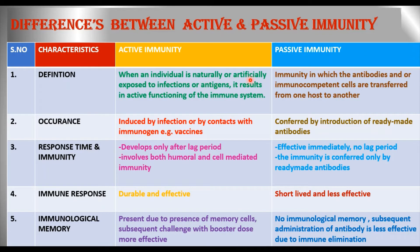What is the definition of active immunity? When an individual is naturally or artificially exposed to infections or antigens, it results in active functioning of the immune system. Passive immunity is when antibodies and/or immunocompetent cells are transferred from one host to another — that is, from the donor to the recipient.